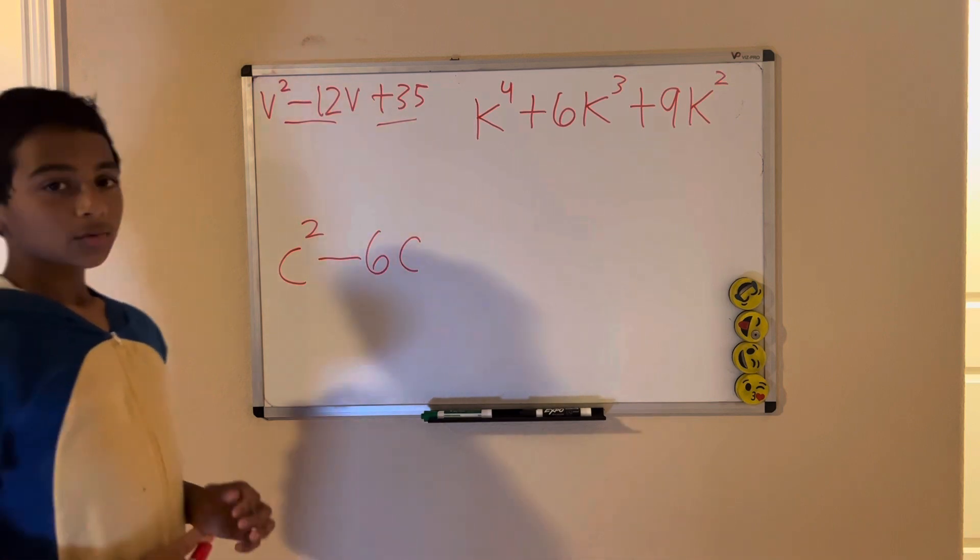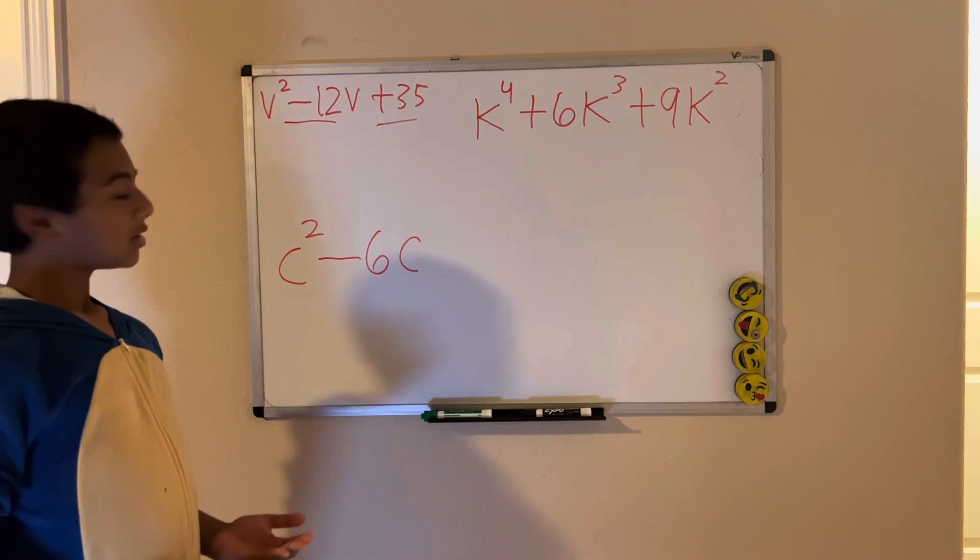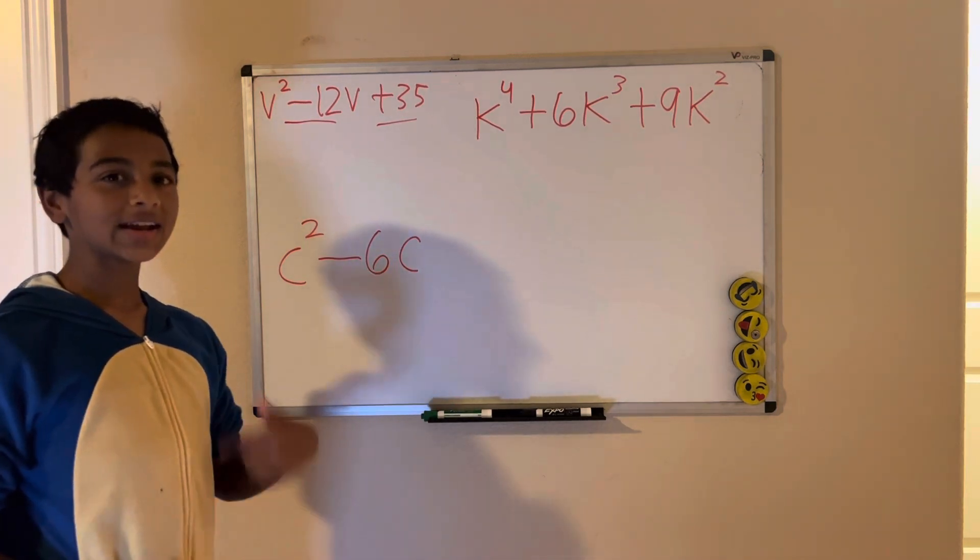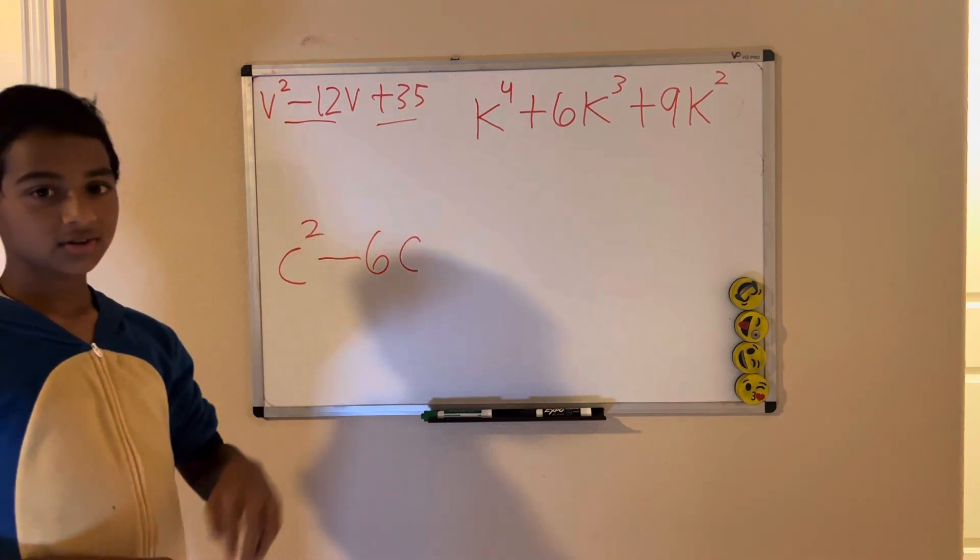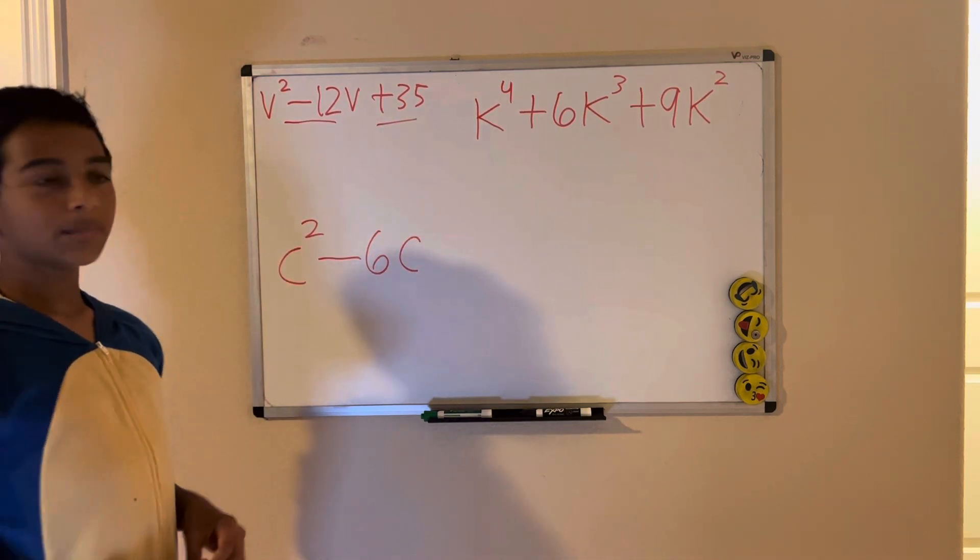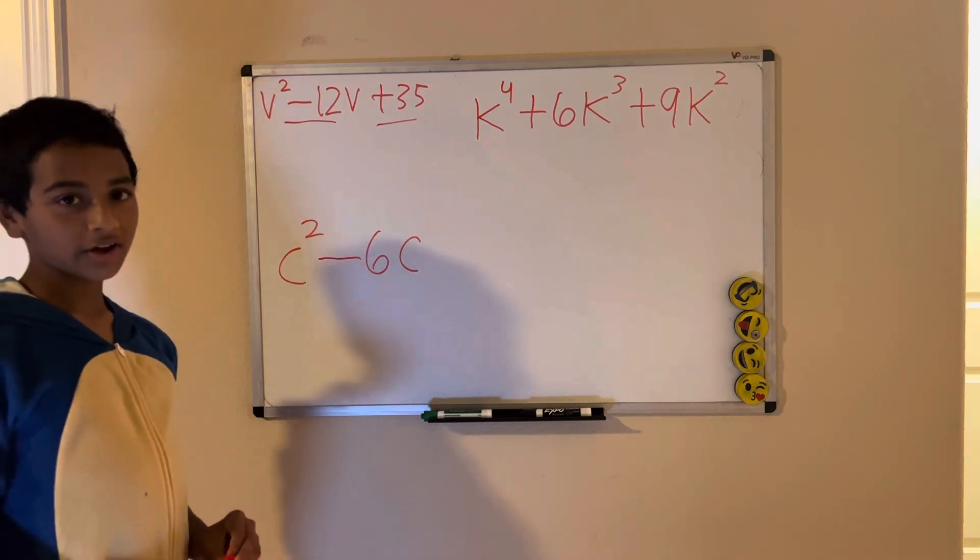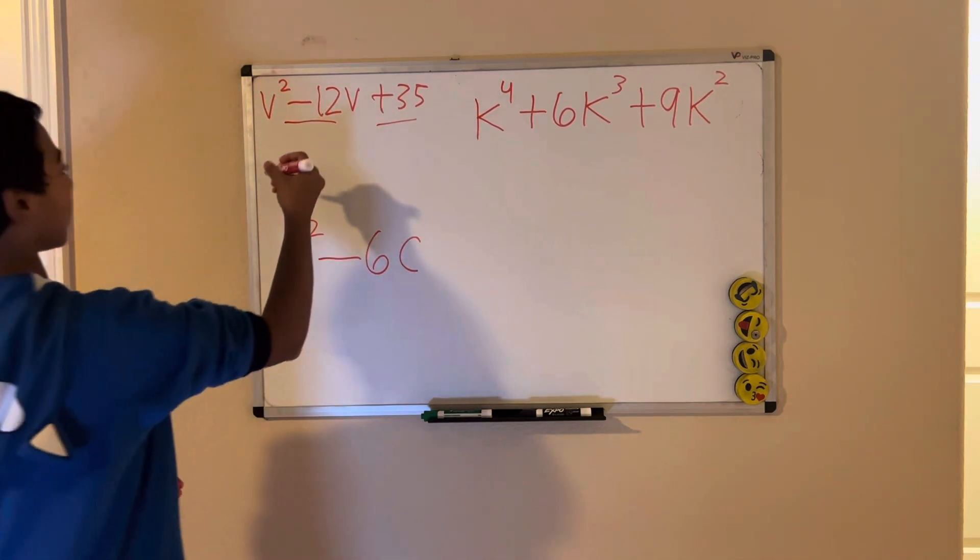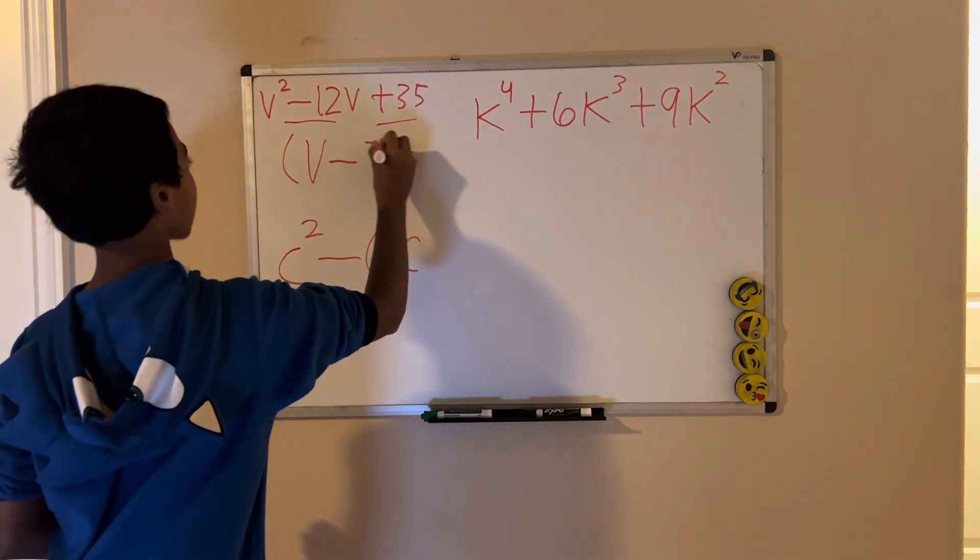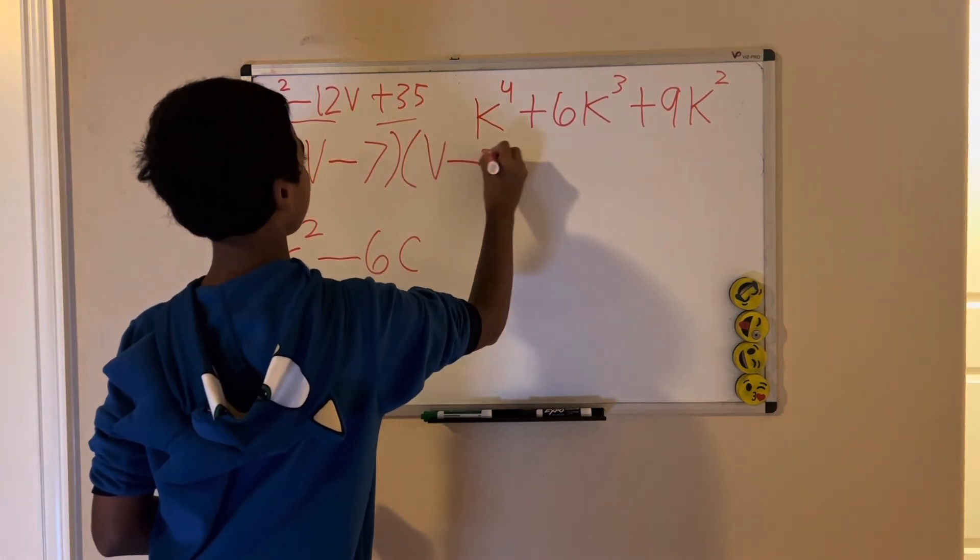Let's think about it. We have 7 times 5 is 35, but negative 7 plus negative 5 is negative 12, and negative 7 times negative 5 is 35. So the two numbers are negative 7 and negative 5. How would you write that? It would be v minus 7 times v minus 5.